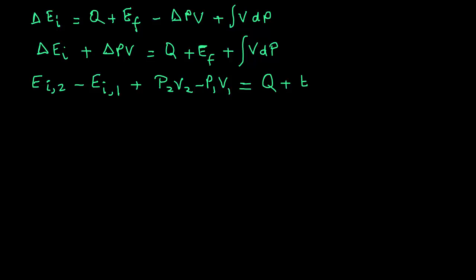And then, of course, we can combine some of the terms on the left hand side to write as (EI,2 plus P2V2) in parentheses, and minus (EI,1 plus P1V1), again in parentheses. And that equals the right hand side, Q plus EF plus integral VdP.